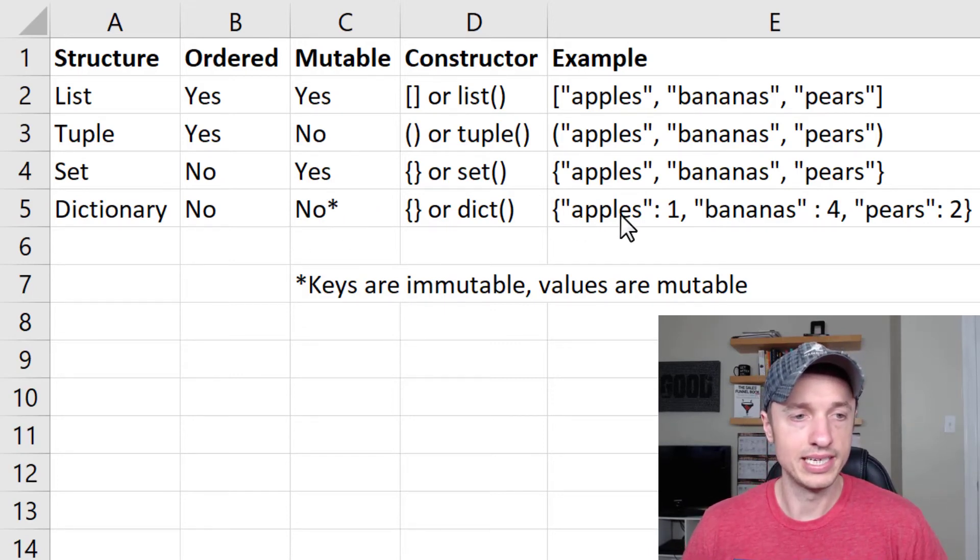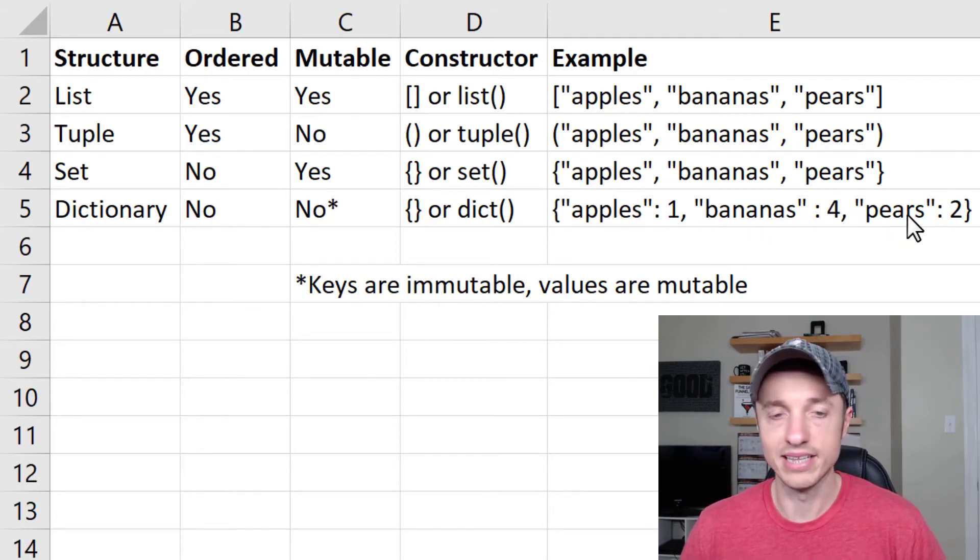Now note, dictionaries are broken into keys. So apples here is a key, and then values. So the value is one. Bananas is a key, and the value is four. Pears is a key, the value is two.